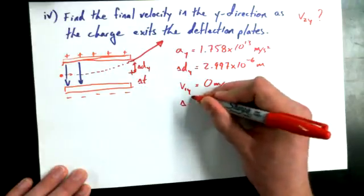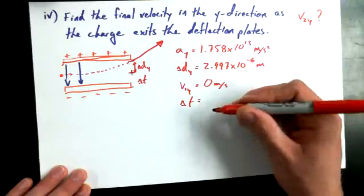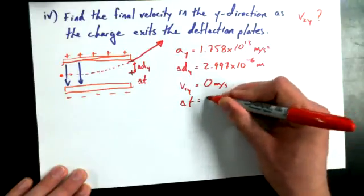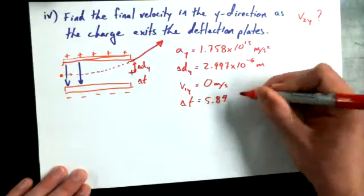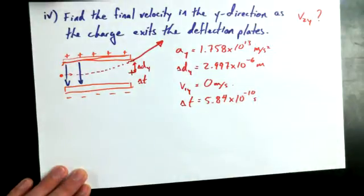Beauty. Always useful. How long is it traveling? So delta T we said before was equal to 5.84 times 10 to the power of negative 10 seconds, or not long at all.